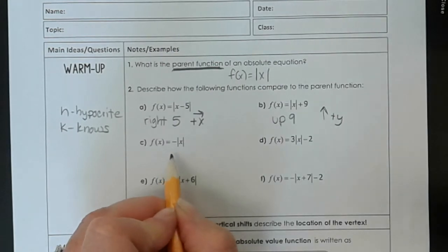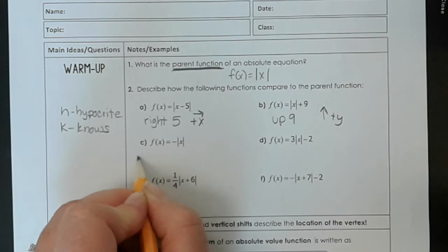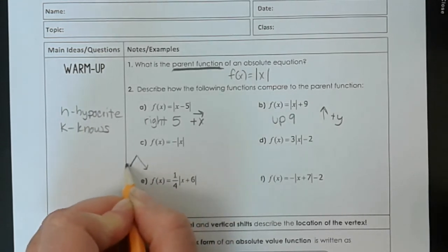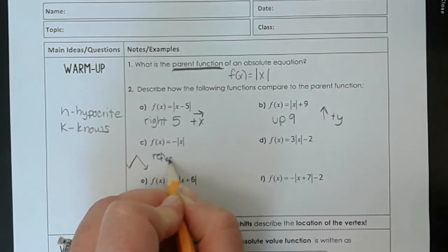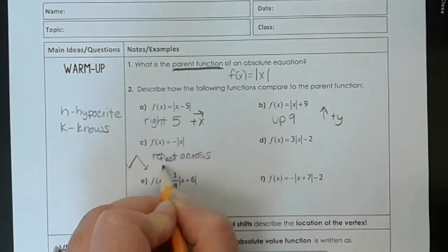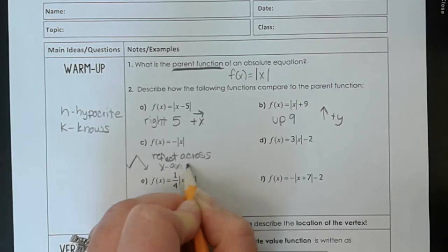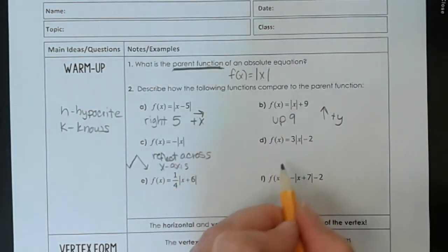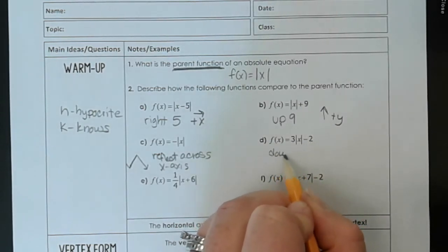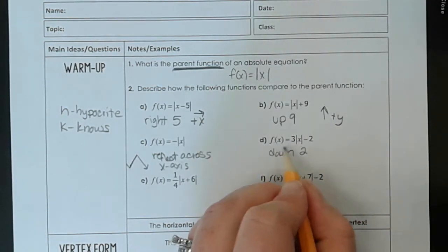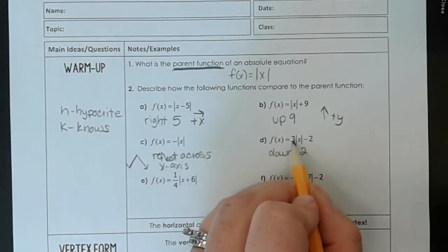Let's take a look at this one. If you have a negative in front of the absolute value, this just flips it over. So this is going to reflect across the x-axis. Now this one, so this is a k. This is outside of the absolute value. So this affects our y values. So this goes down 2.